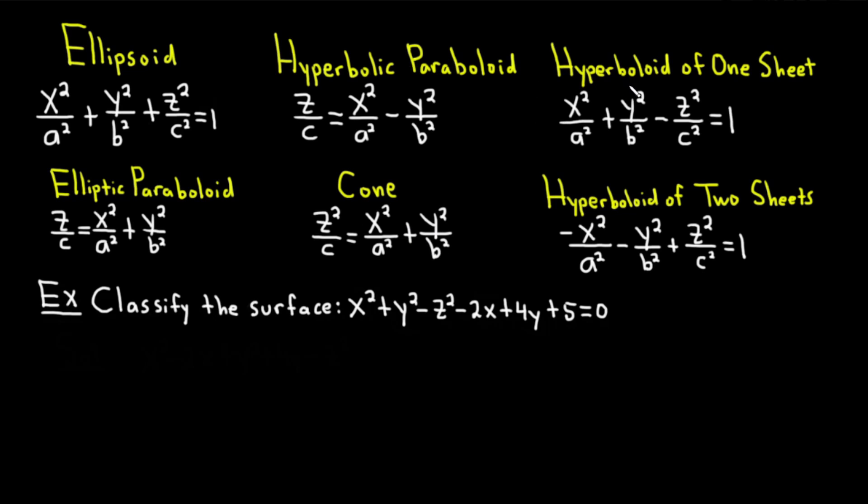And lastly, we have these hyperboloids. We have the hyperboloid of one sheet and the hyperboloid of two sheets. Notice in the formula for the hyperboloid of one sheet, there's one minus sign. And in the formula for the hyperboloid of two sheets, there's two minus signs. That could be a useful memory trick.